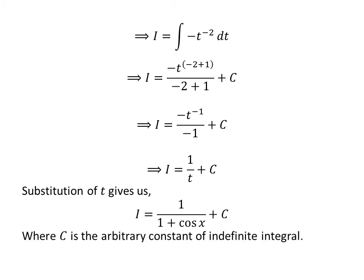Let us substitute t in terms of x. As we had assumed t equals 1 plus cosine x, so I equals 1 upon 1 plus cosine x plus capital C.